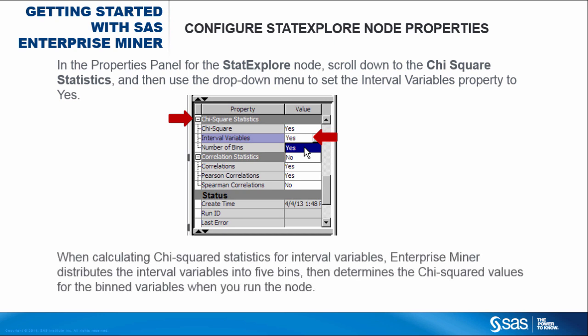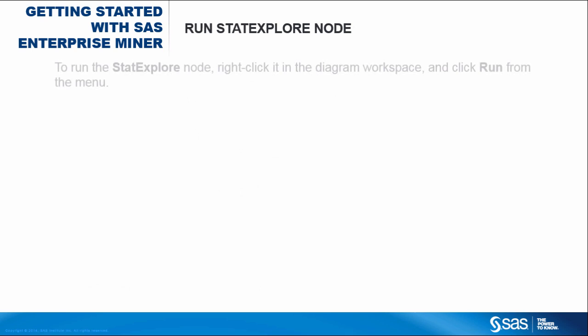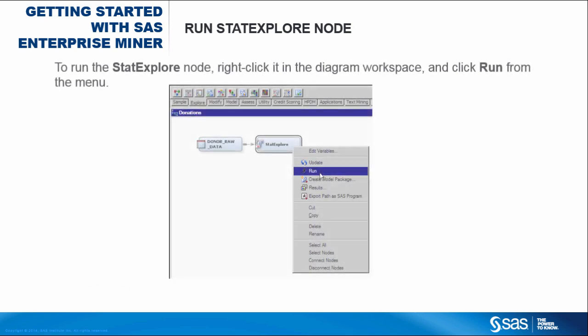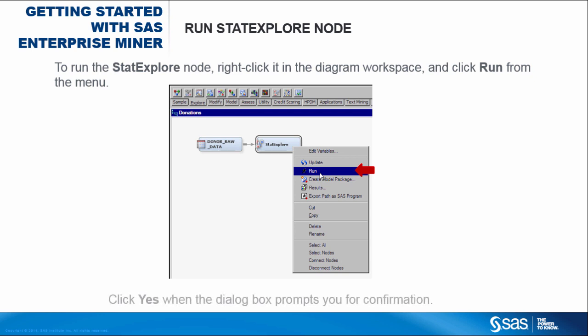When calculating Chi-Square statistics for interval variables, Enterprise Miner distributes the interval variables into five bins, then determines the Chi-Square values for the bin variables when you run the node. To run the StatExplore node, right-click it in the diagram workspace, and then click Run from the menu.